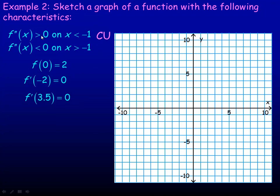Since the second derivative is greater than 0 where x is less than negative 1, the graph is concave up to the left of negative 1. The second derivative is less than 0 where x is greater than negative 1, so the graph is concave down to the right of negative 1. At x equals negative 2 — which is to the left of negative 1, in the concave up region — there's a horizontal tangent, so there has to be a minimum point at negative 2. At x equals 3.5, which is in the concave down region, there's a horizontal tangent, so there has to be a maximum point at x equals 3.5.